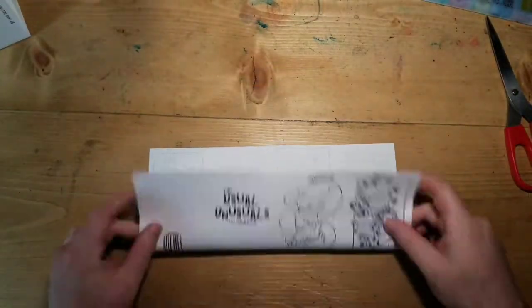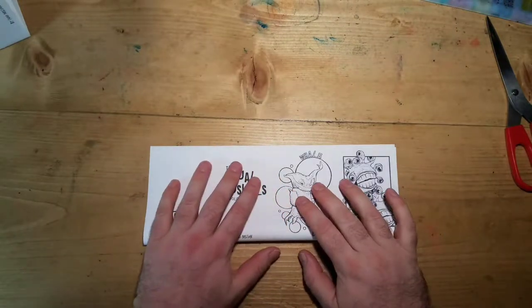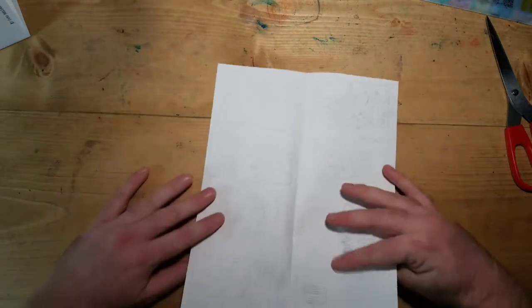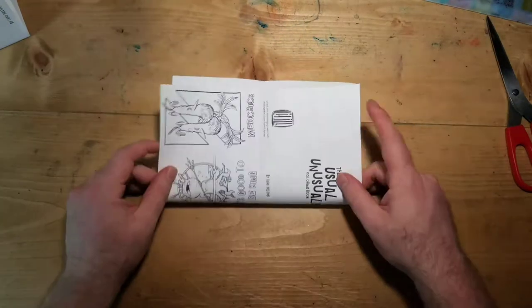First you take an 8.5 by 11 sheet of paper and you fold that sucker in half. Then you take that sheet of paper and you fold it in half the other way.